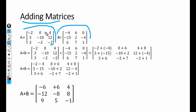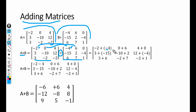For the addition A + B, we add the corresponding elements. For example, the corresponding element of minus 2 is minus 4, so we add minus 2 plus minus 4. The corresponding element of 0 is 6, so we have 0 plus 6. Similarly, the corresponding element of 4 is 0, giving us 4 plus 0. Then we have 3 plus minus 15, minus 10 plus 2, and 12 minus 4, then 3 plus 6, minus 2 plus 7, and minus 2 plus 1.